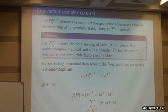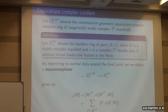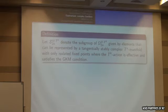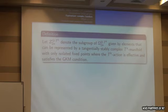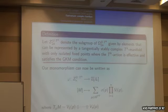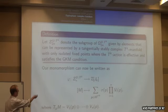Tom Dieck, in the 1970s — I'm not entirely sure if he also proved it with his student Peter Loeffler — showed this is a monomorphism essentially only for the torus. So now we restrict to our case: we let Z denote the subgroup of Ω given by elements represented by manifolds that only have isolated fixed points and that satisfy the GKM condition.